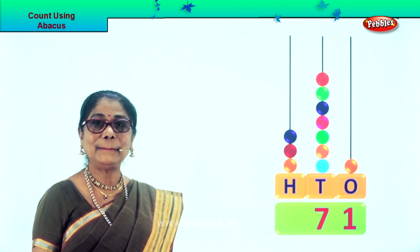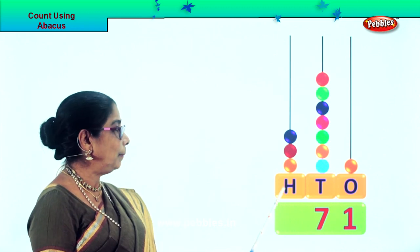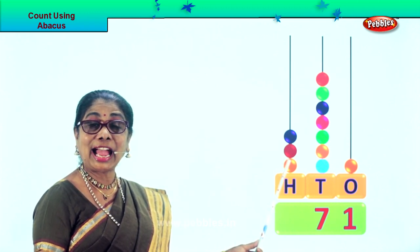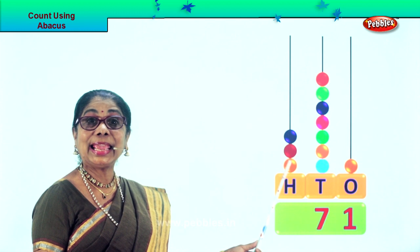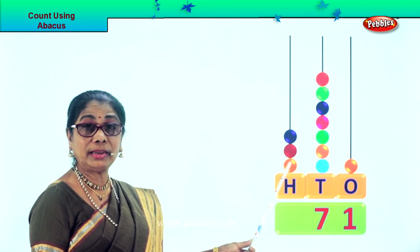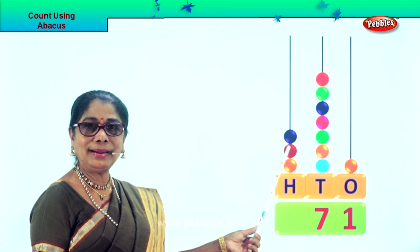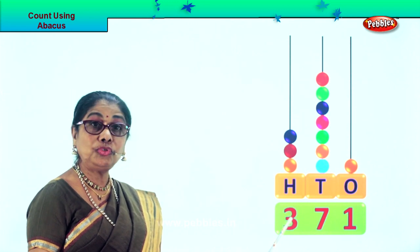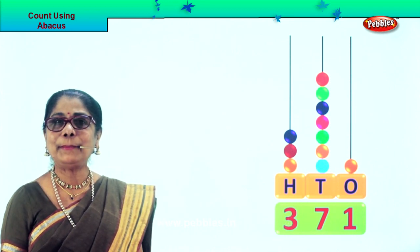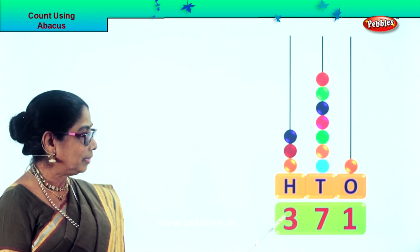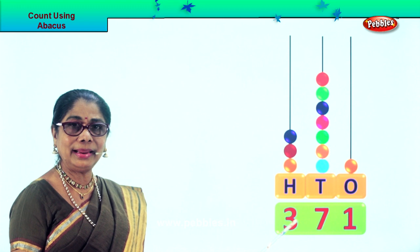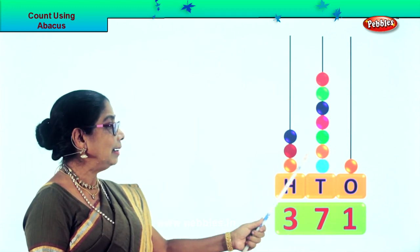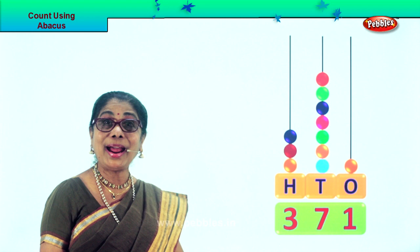Let's get on to the 100s place. Each beat is 100. Count in 100: 100, 200, 300. So we put 3. Let's read the number: 371.